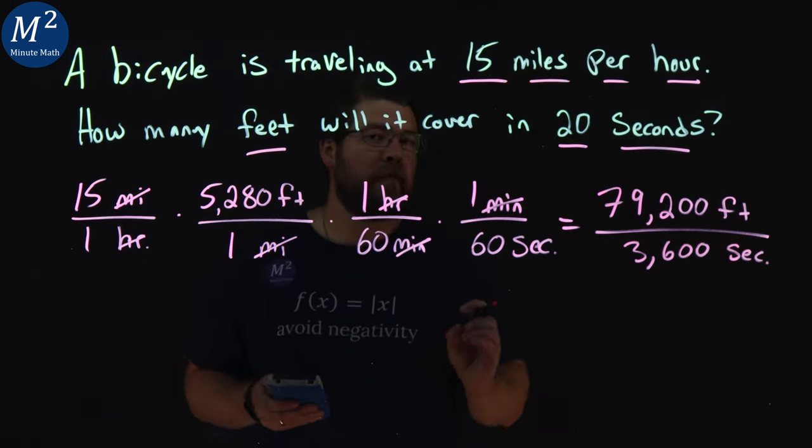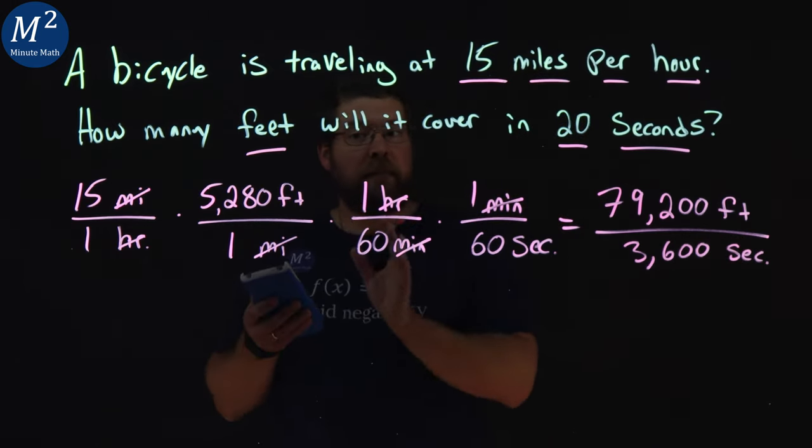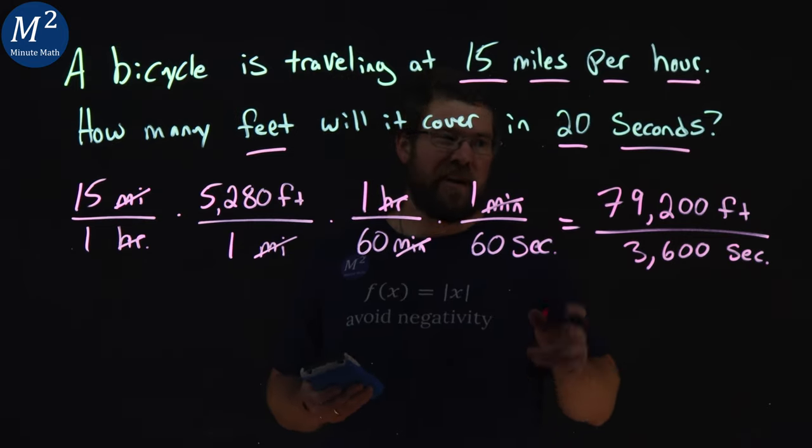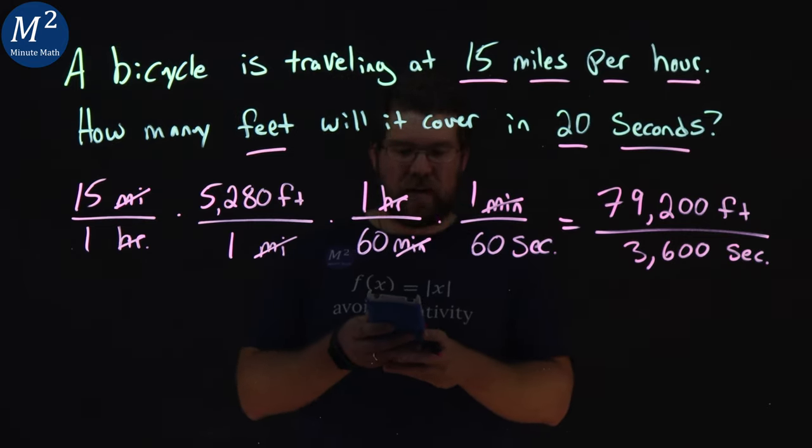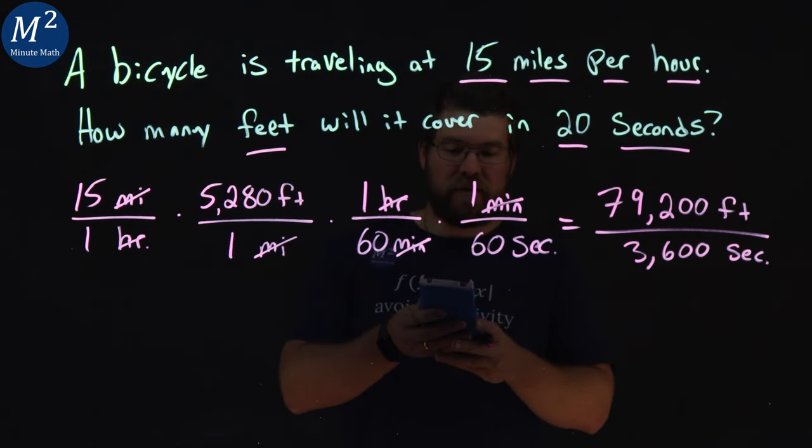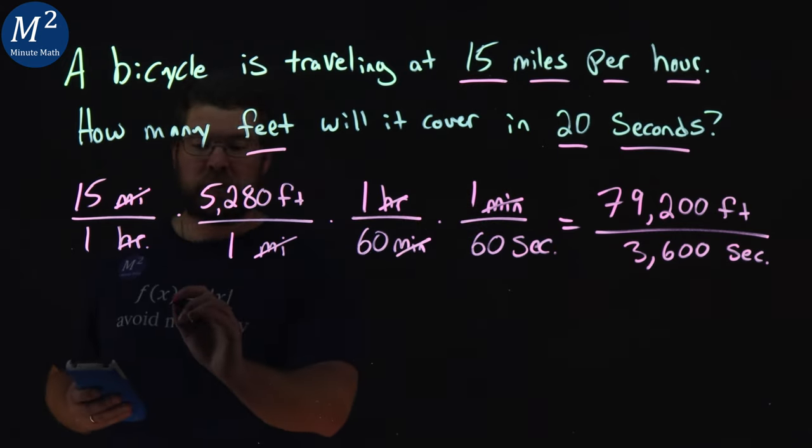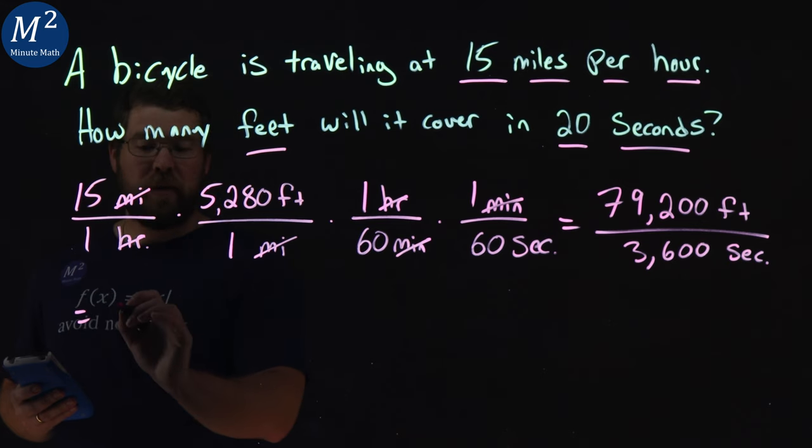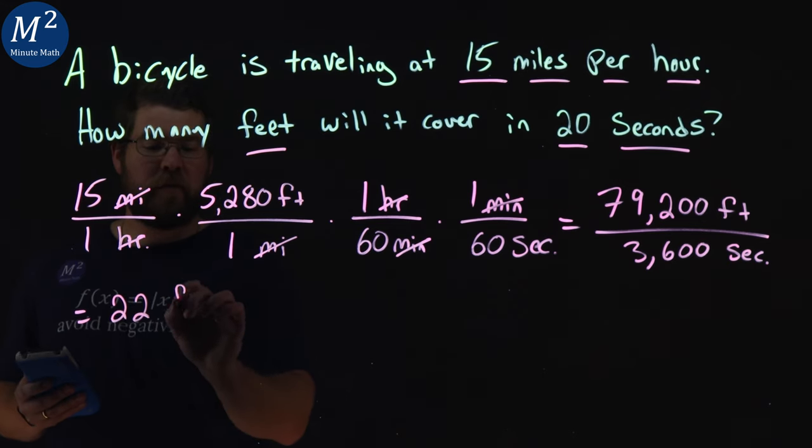But we want to find the unit rate, how many feet per one second it is. So we take that 79,200 and divide it by 3,600 and we get 22. So this whole thing becomes 22 feet per one second.